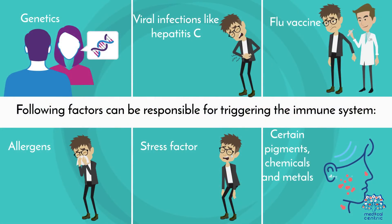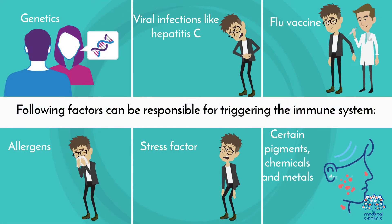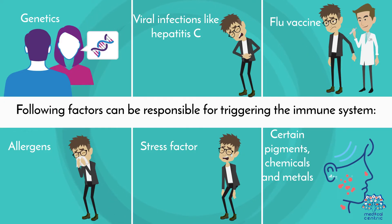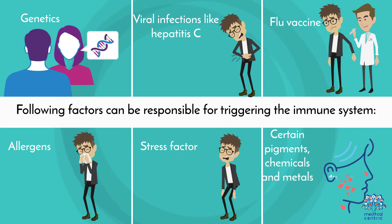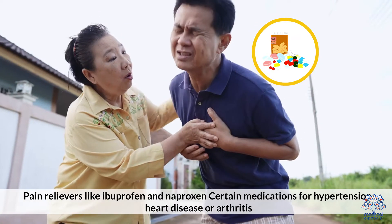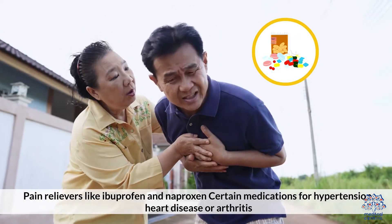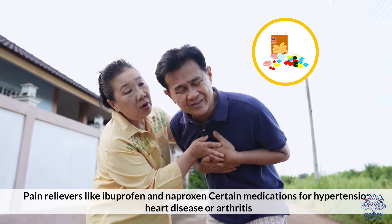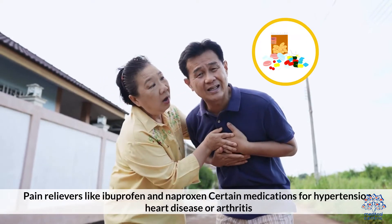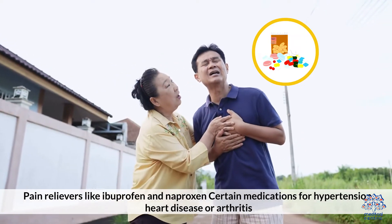The following factors can be responsible for triggering the immune system: genetics; viral infections like Hepatitis C or flu vaccine; allergens; stress; certain pigments, chemicals, and metals; pain relievers like ibuprofen and naproxen; and certain medications for hypertension, heart disease, or arthritis.